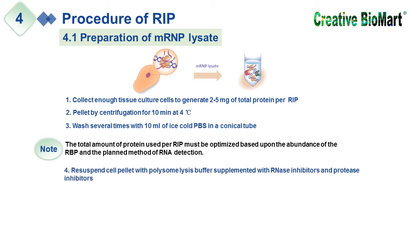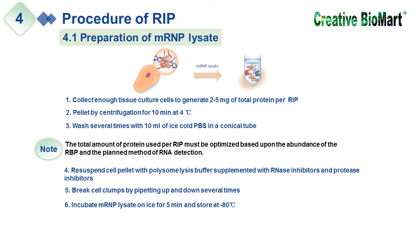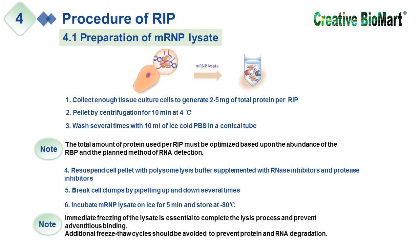Fourth, resuspend cell pellet with polysome lysis buffer supplemented with ribonuclease inhibitors and protease inhibitors. Fifth, break cell clumps by pipetting up and down several times. Sixth, incubate mRNP lysate on ice for 5 minutes and store at -80°C. Note: immediate freezing of the lysate is essential to complete the lysis process and prevent adventitious binding. Additional freeze-thaw cycles should be avoided to prevent protein and RNA degradation.